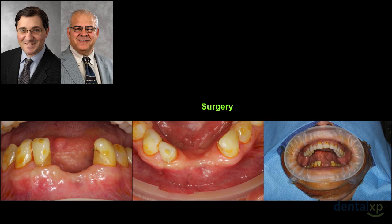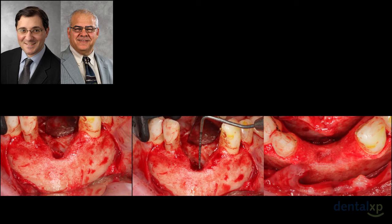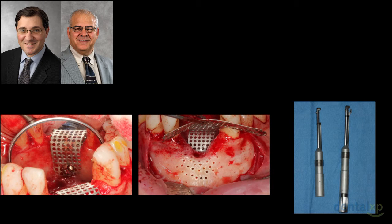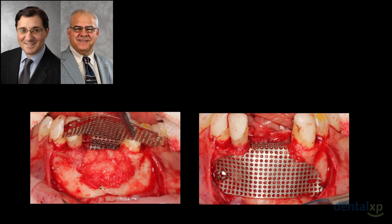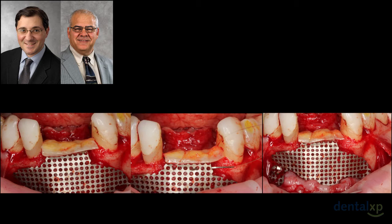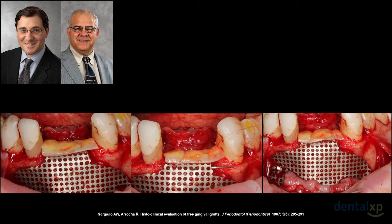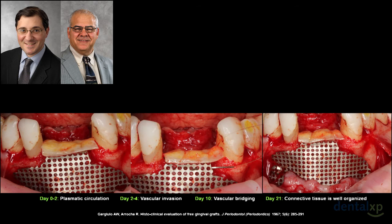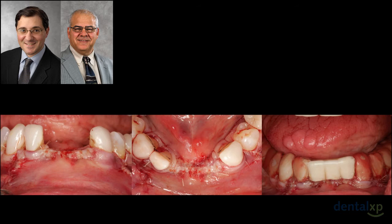Here's the surgery — there's the defect, patient prepped and sedated. We open up the areas, degranulate. Cortical perforations, fixated on the lingual aspect with Stryker instrumentation. There's the space we're going to maintain — BMP and a cancellous allograft. The mesh is fixated into position. I'll oftentimes take a connective tissue graft and suture it to the mesh, because in the event of any opening, I'd like to have a vascular base. The connective tissue graft heals initially by plasmatic circulation, then by vascular invasion and bridging — at 21 days the connective tissue is well organized.